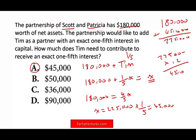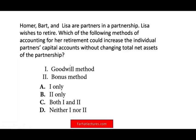Homer, Bart, and Lisa are partners in a partnership. Lisa wishes to retire. Which of the following methods of accounting for her retirement could increase the individual partners' capital accounts without changing the total net assets of the partnership? Here, we have to be aware there are two methods: the goodwill method and the bonus method. Before going into the exam, you need to understand both methods.